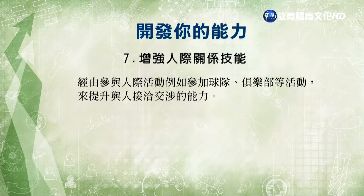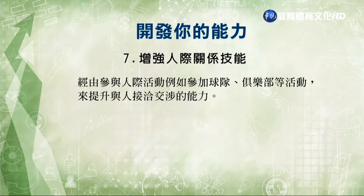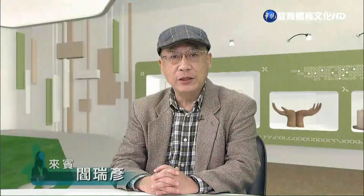讓客戶明確知道，如果用錯語意或有錯別字，就會產生不好的效果。第七個建議是增強人際關係的技能，我們可以參與一些人際活動，比方說參加球隊、俱樂部等活動，來提升跟人接觸的機會跟接洽的能力。能力的提升是透過不斷的練習，把握每一個跟人互動的機會，可以增加這方面的能力。